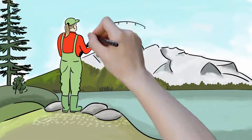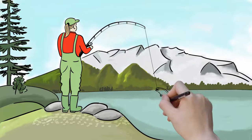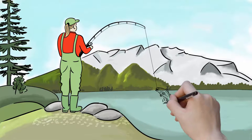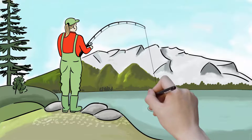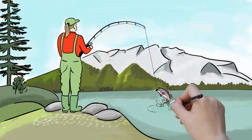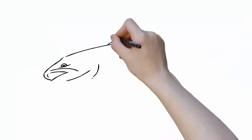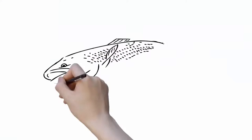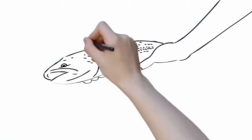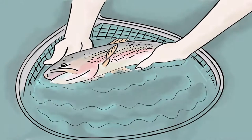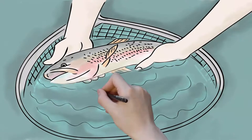Regulations for catch and size limits are in place to conserve at-risk fish populations like Alberta's native trout species. Knowing how to identify fish is an essential skill to have as an angler to ensure you are following provincial sport fishing regulations.